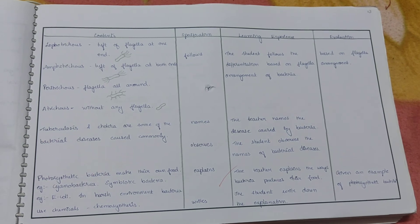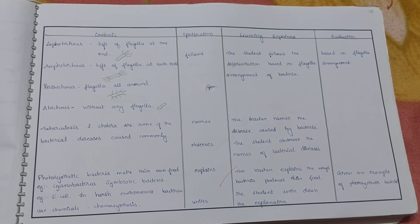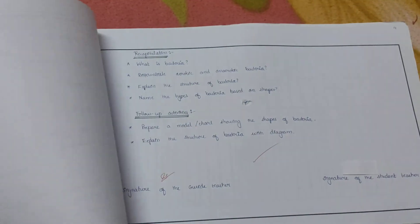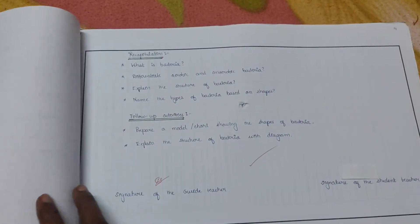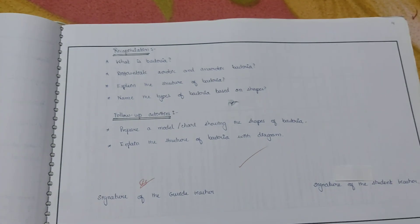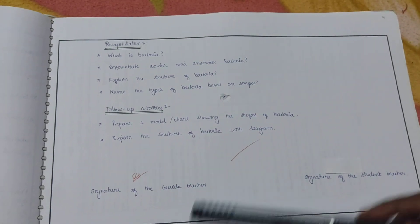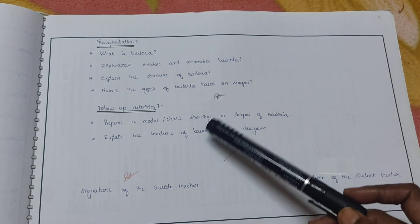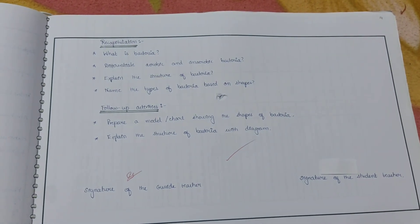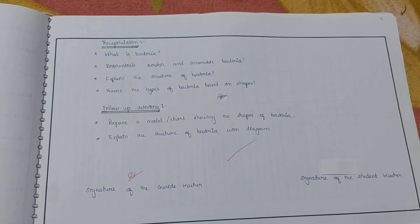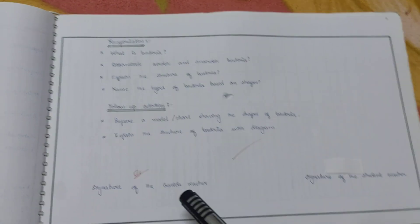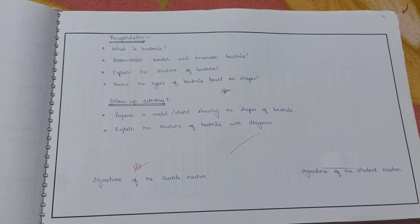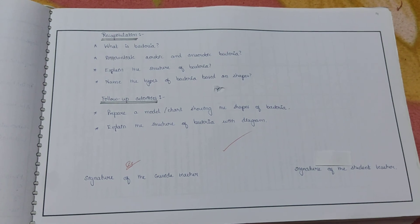I hope my handwriting is clear for you. Here comes the last page of this lesson, which is the recapitulation and follow-up activities. At least two activities we will have to assign for the children for each lesson plan. To end, we have the guide teacher signature and student teacher signature. Thank you.